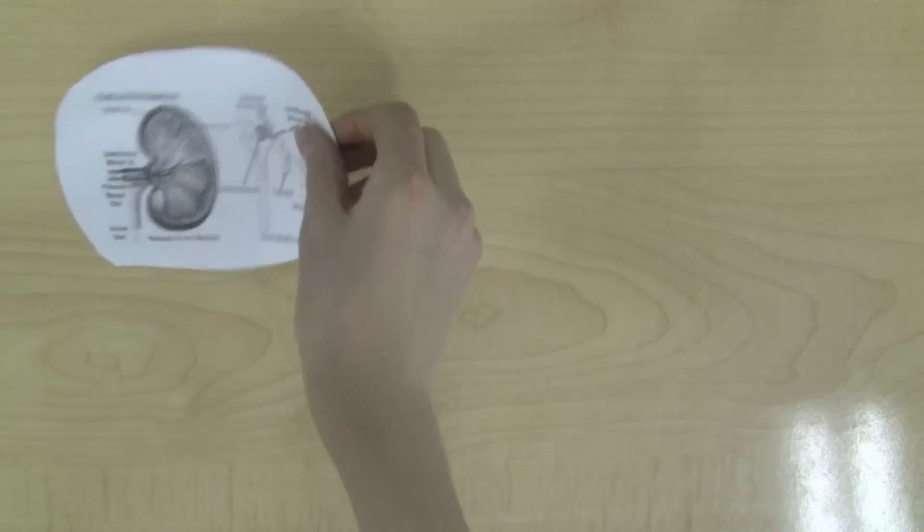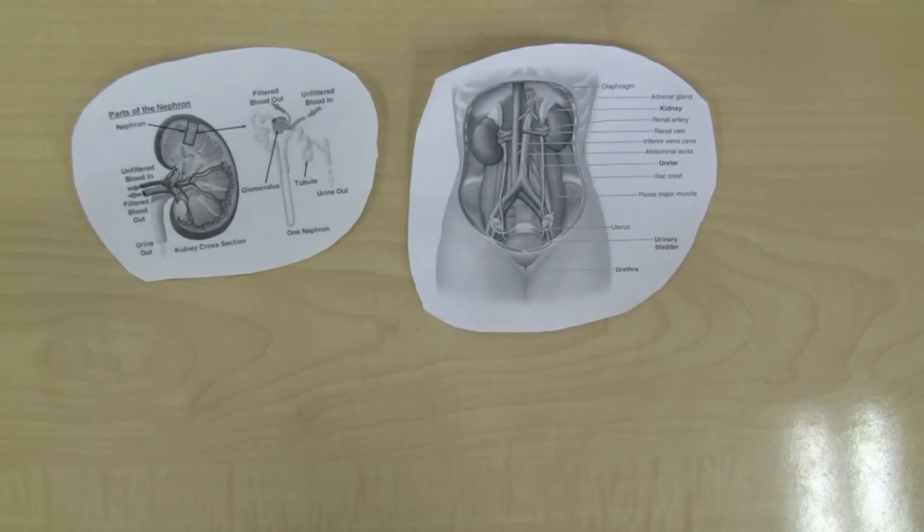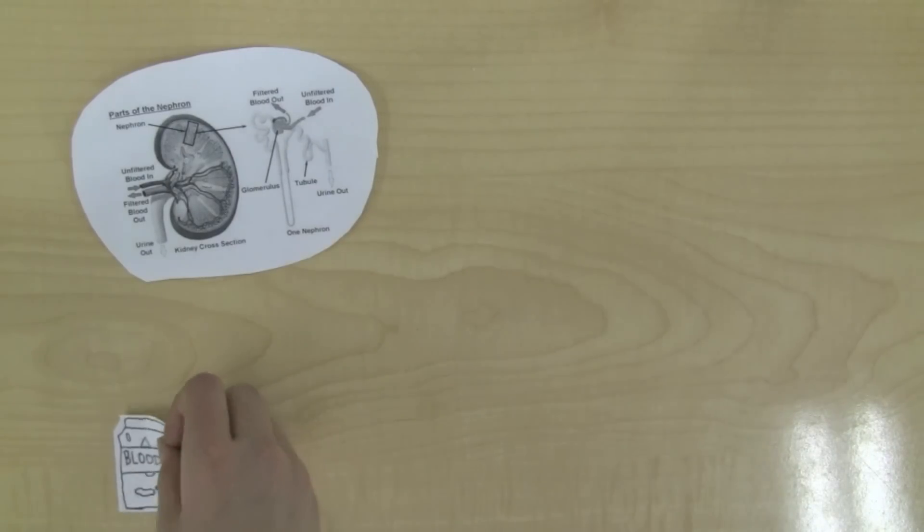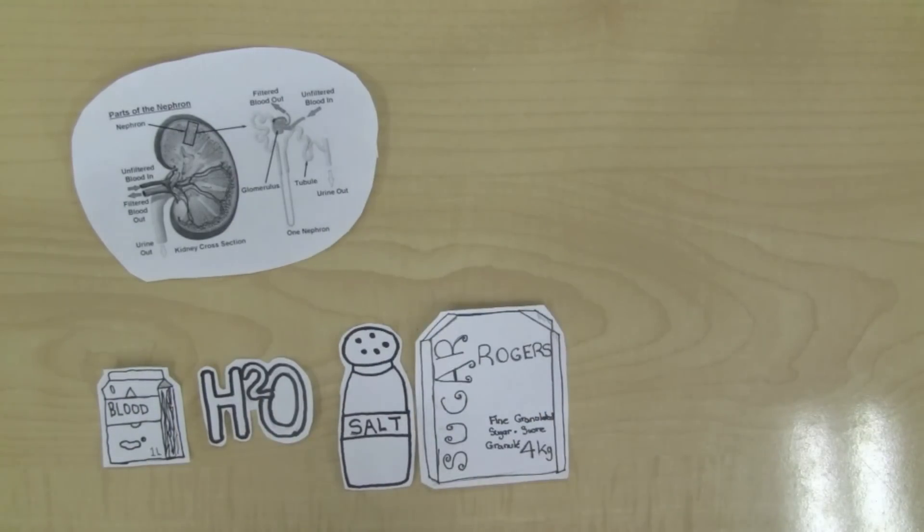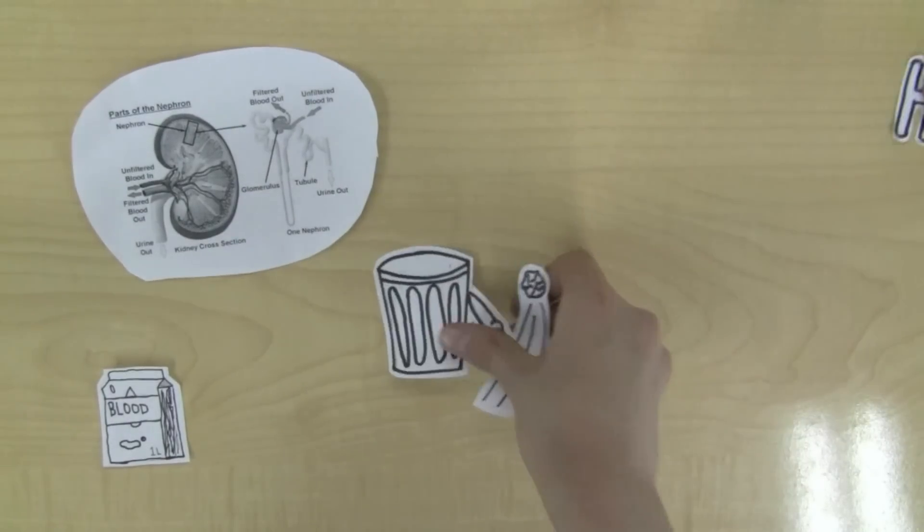The nephrons are microscopic tubes in the kidneys that play a big role in the Excretory System. They filter and regulate the amount of water, salts, and sugar that circle through the body. They filter the blood, then turn the unnecessary waste into urine.